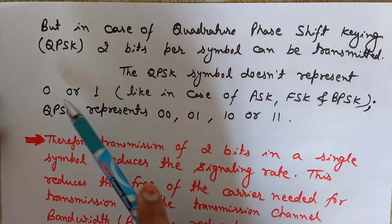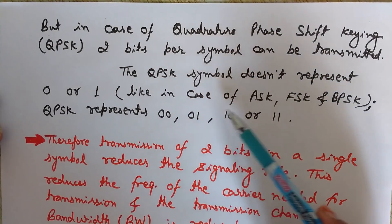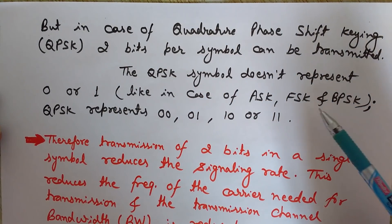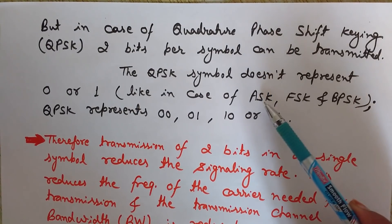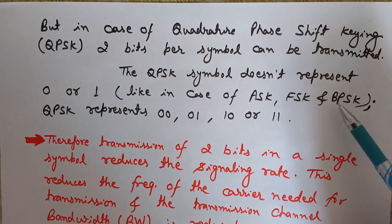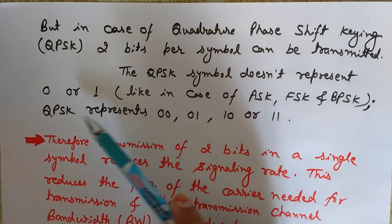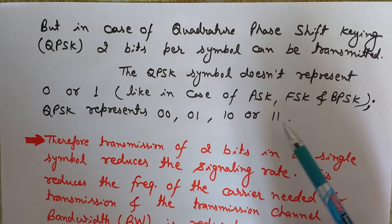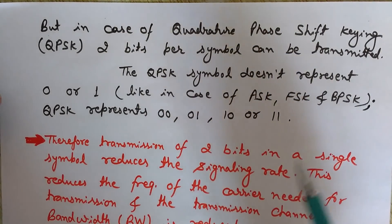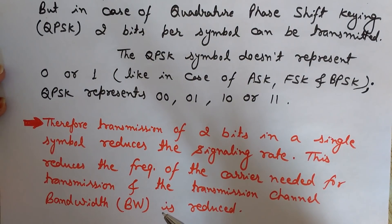The QPSK symbol doesn't represent just zero or one like in ASK, FSK, and BPSK, where there were two symbols with two amplitudes, two frequencies, or two phases. Here, two bits are transmitted per symbol, so QPSK represents 00, 01, 10, or 11. These are the four cases.